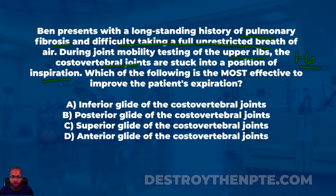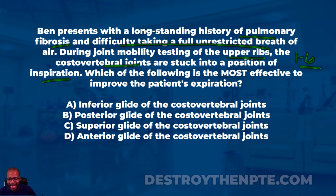Before dissecting this question, let me read out the answer choices again. A is inferior glide of the costovertebral joints, B is posterior glide of the costovertebral joints, C is superior glide of the costovertebral joints, and D is anterior glide of the costovertebral joints. The joints we're talking about are the costovertebral joints, and the patient is stuck into inspiration.